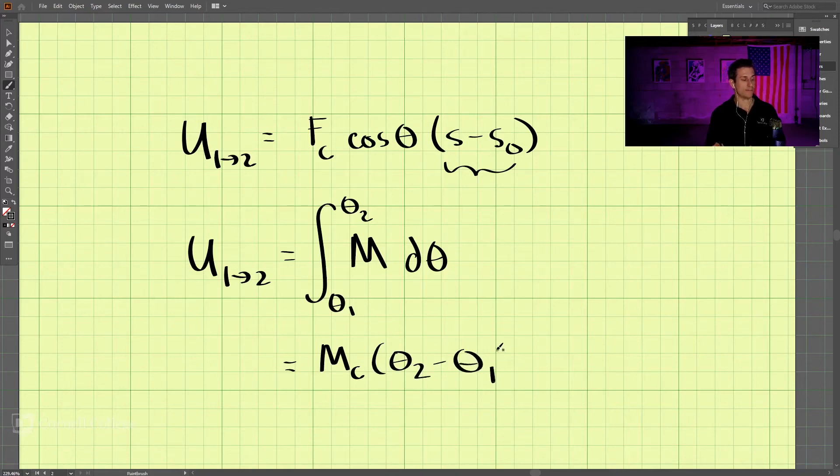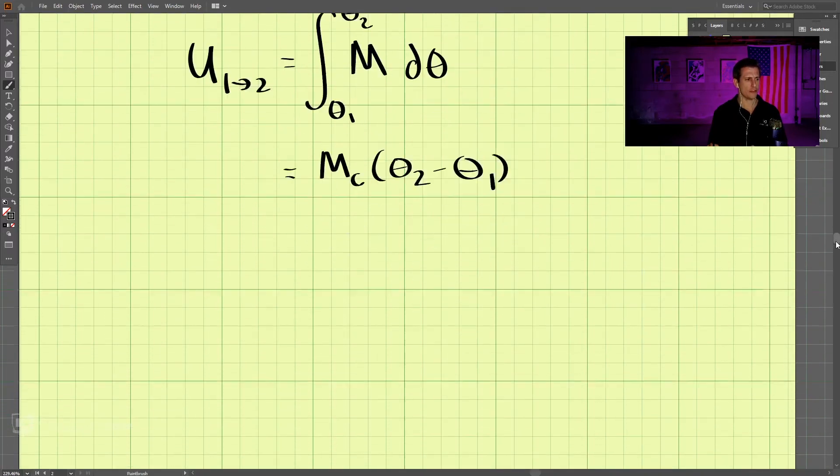And if the moment is a constant we just get M times theta two minus theta one. So when would we use this? Let's take for example if we want to know the work done if this beam that's fixed on this end.